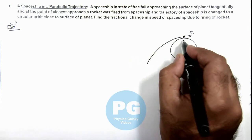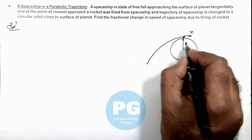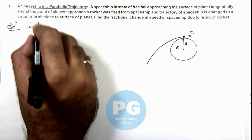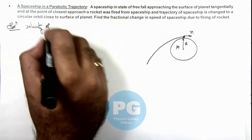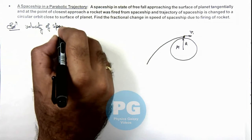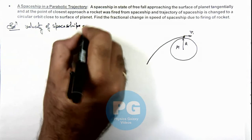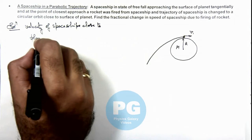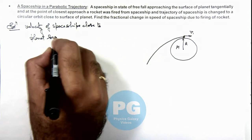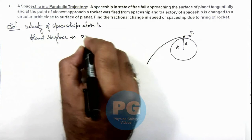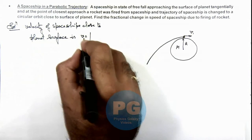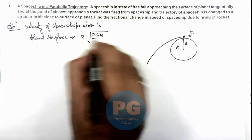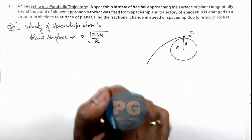So if the planet radius is R and its mass is M, we can say the velocity of the spaceship close to the planet surface is given by v1, which is the root of 2GM/R. This is the speed in the parabolic trajectory.